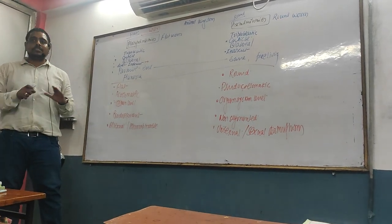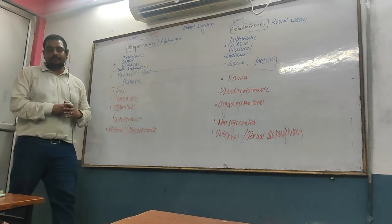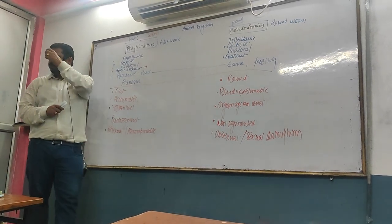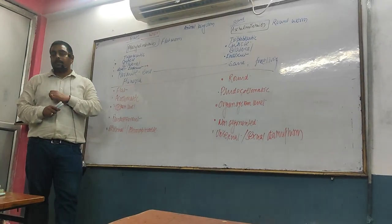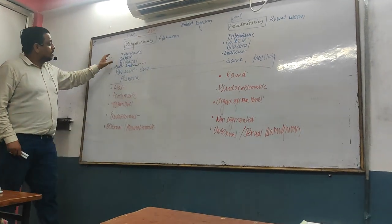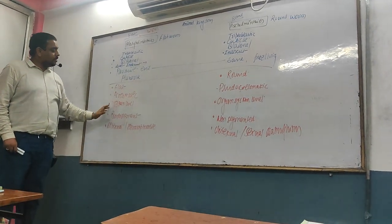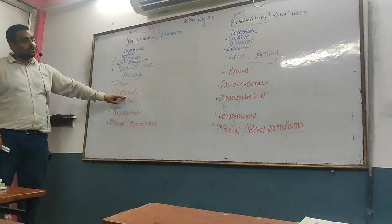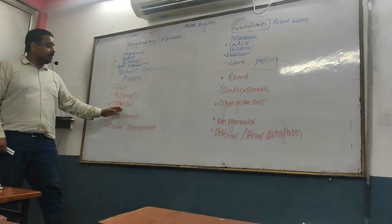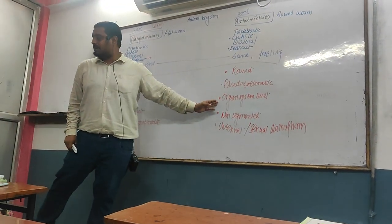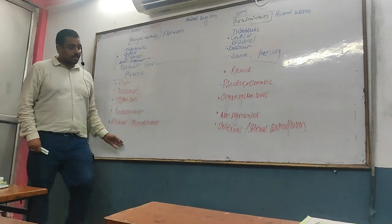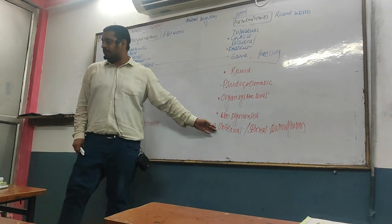So what do we know about it? How do you know the phyla? The main thing is that there is a coelom — there is an organ-level organization and an organ-system level organization. There is a hermaphrodite nature, there is a unisexuality.